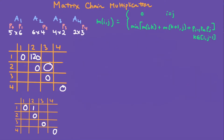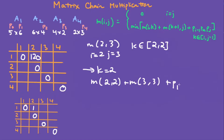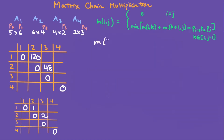Now we want to fill in m[2,3]. i is 2, j is 3, and the loop goes from 2 to 2. When k is 2, we have m[2,2] plus m[3,3] plus p1 * p2 * p3. That's 0 plus 0 plus p1 is 6, p2 is 4, p3 is 2 — giving 48. The loop is finished, so fill in 48 and the chosen k is 2.